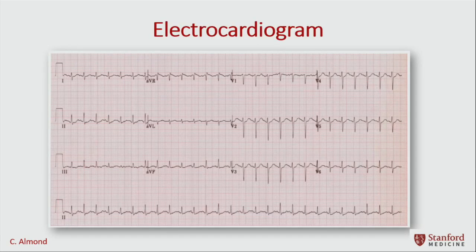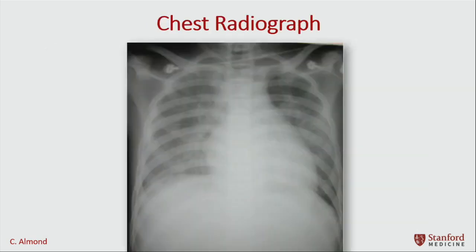This is her electrocardiogram. The main features to note are sinus tachycardia with generally small voltages — those are the classic features you see. It's a little different from dilated cardiomyopathy, where the heart has had a chance to dilate and develop very large voltages. This is a chest radiograph. There's pulmonary edema, and the heart hasn't had a chance to really enlarge, so the cardiac silhouette actually looks pretty close to normal.